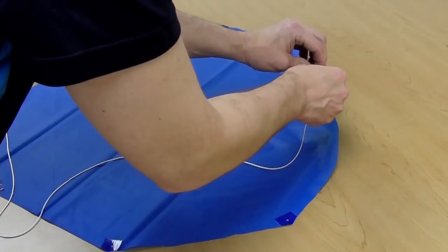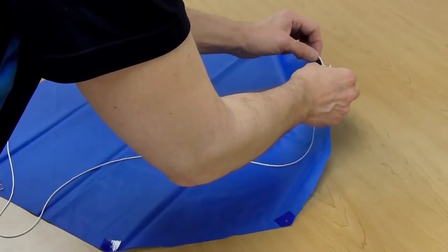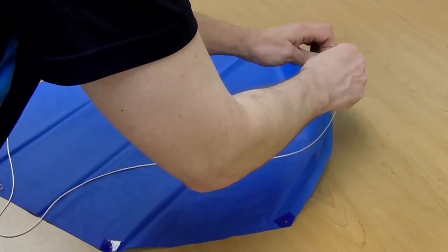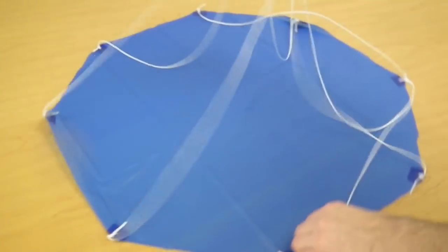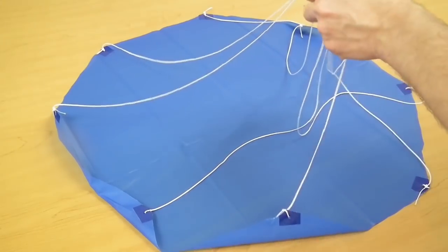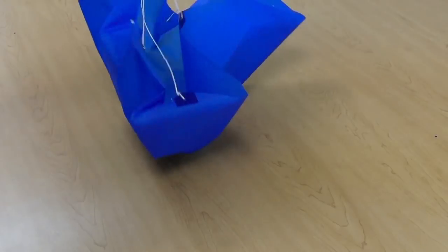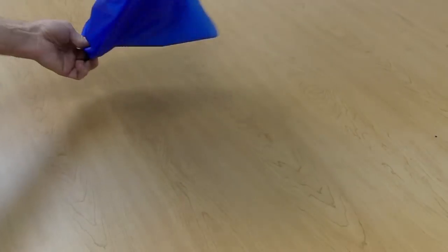Now tie each of the shroud lines diagonally across your chute. After you've tied all eight corners, you'll need to find the center of each shroud line. Pick up the parachute and stretch it out, grabbing it by the top.